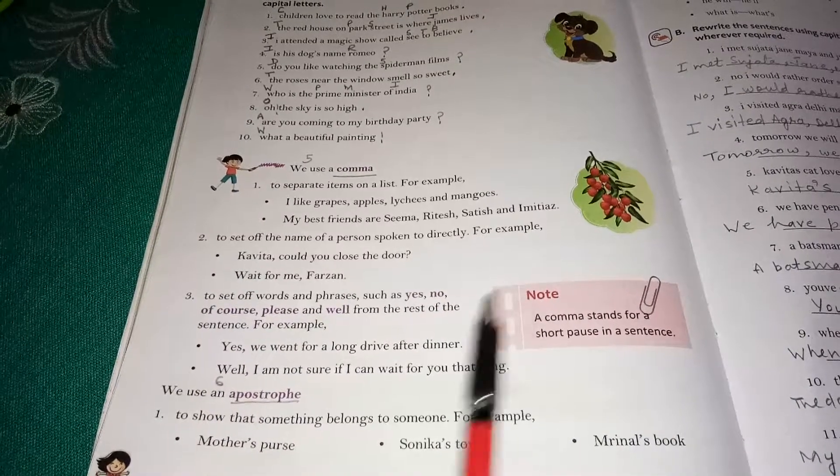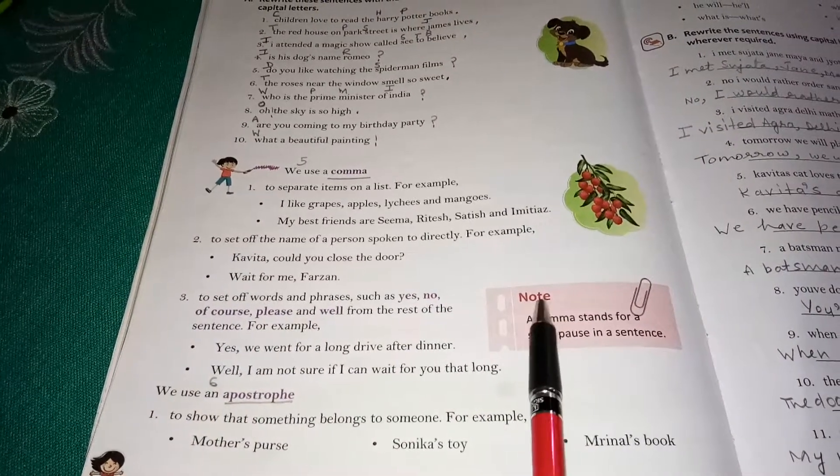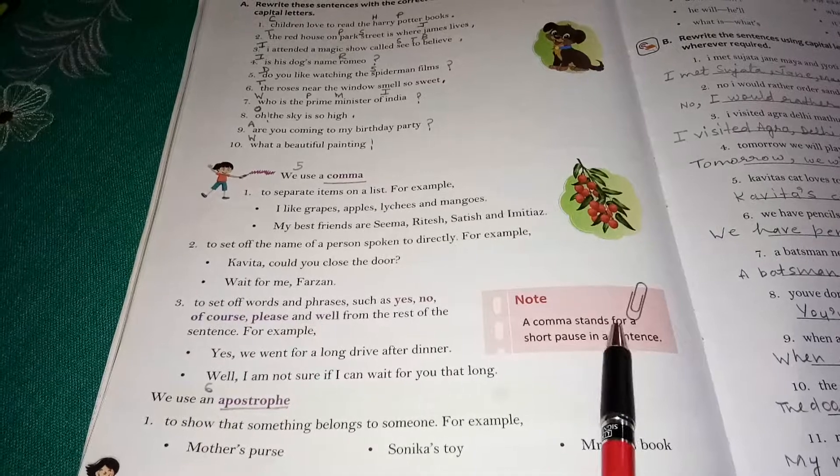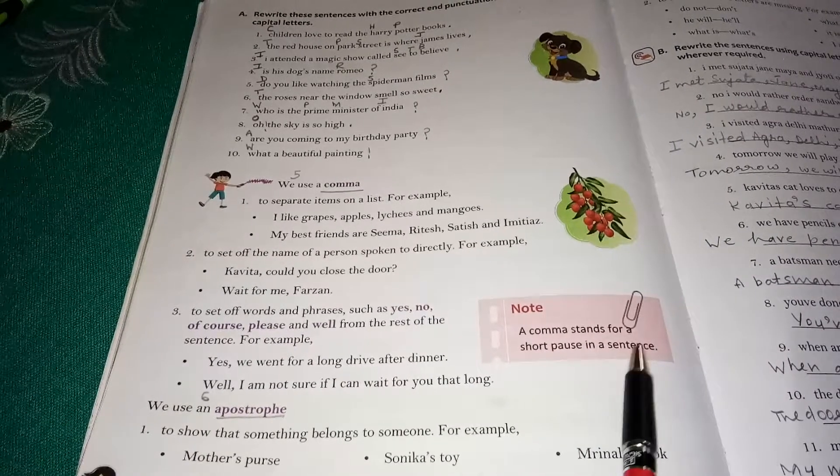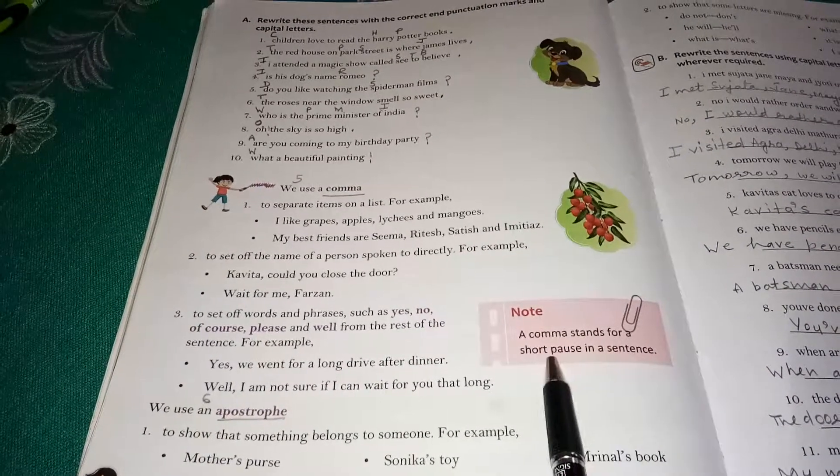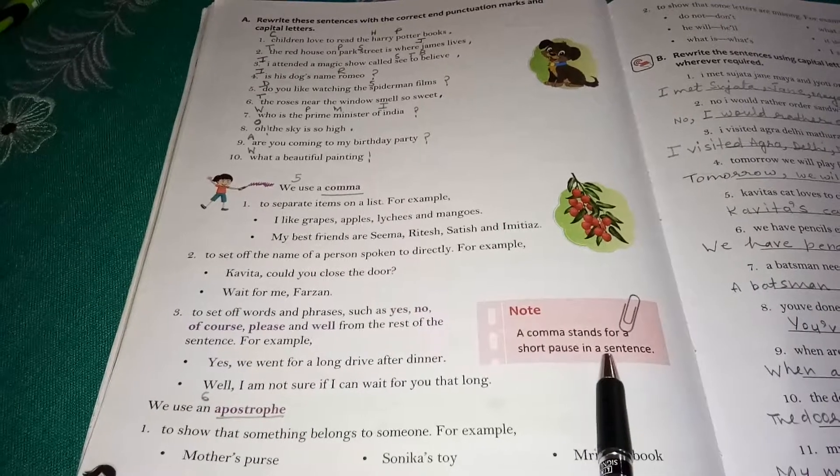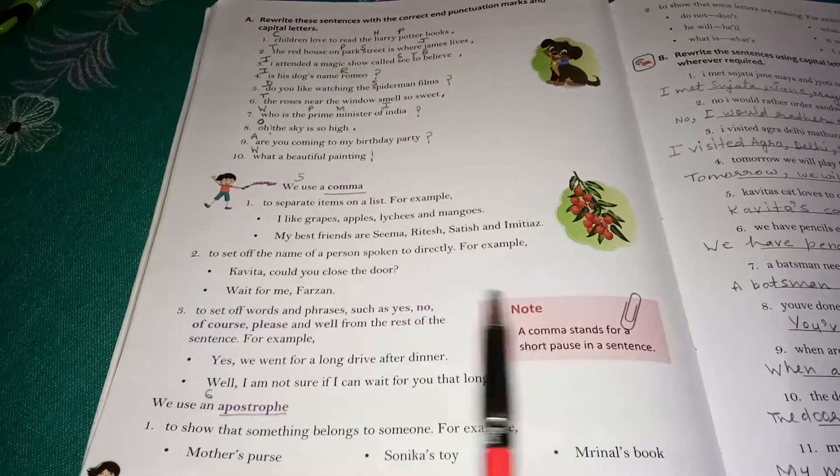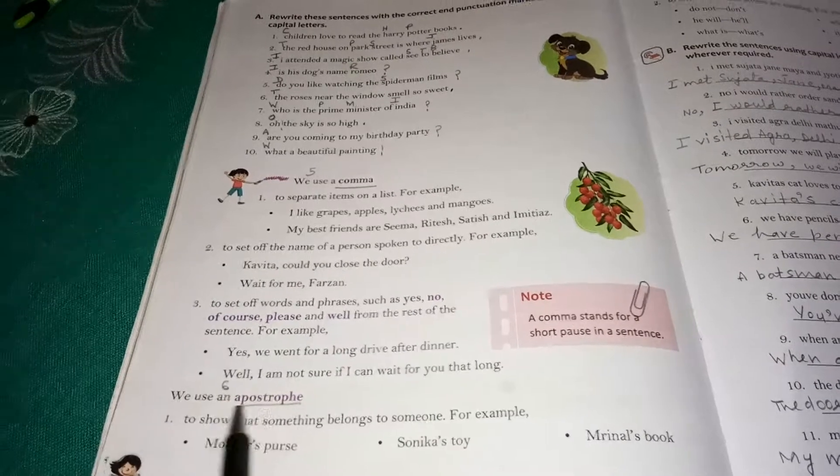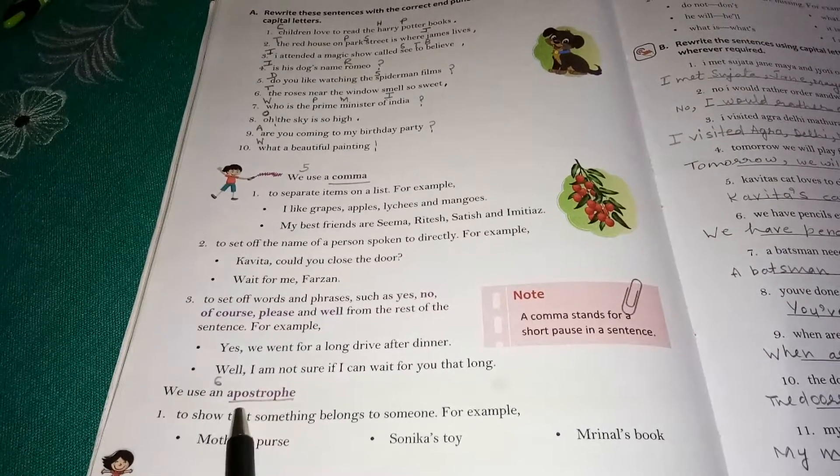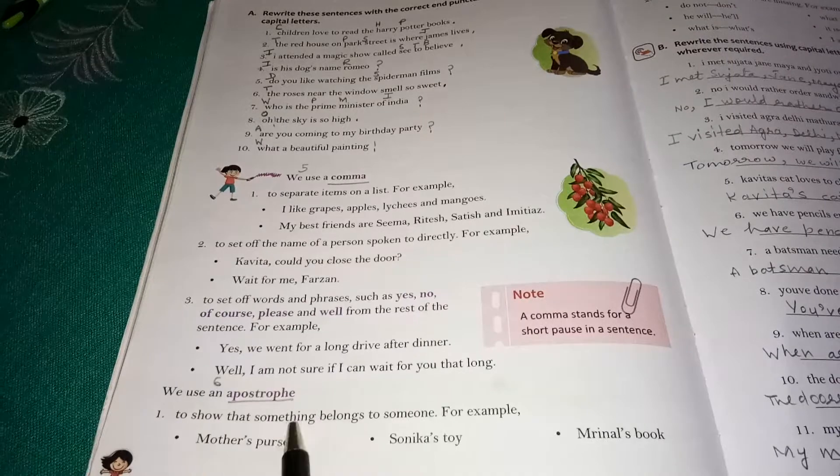Pay attention children. Note: a comma stands for a short pause in a sentence. We stop for a short while in a sentence. That is why we use a comma. Then we use an apostrophe, children, to show that something belongs to someone.